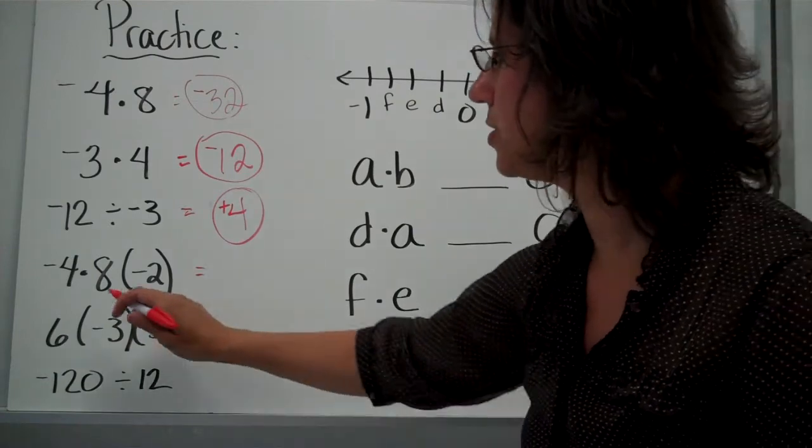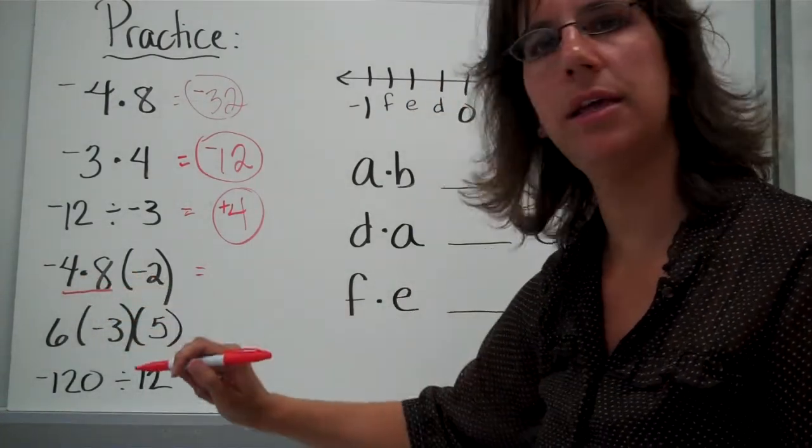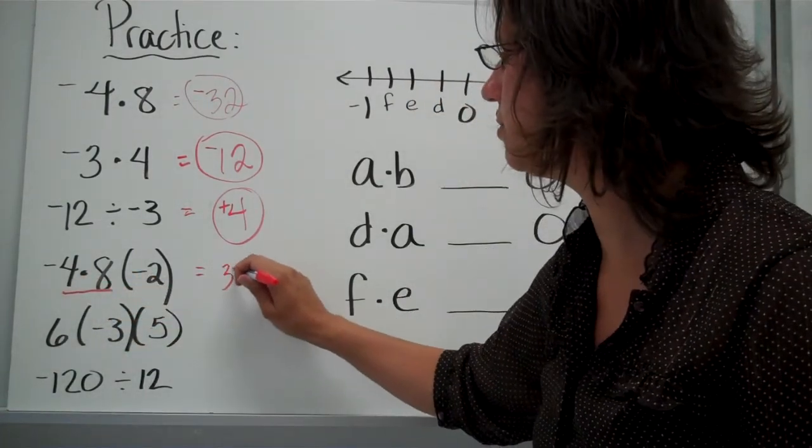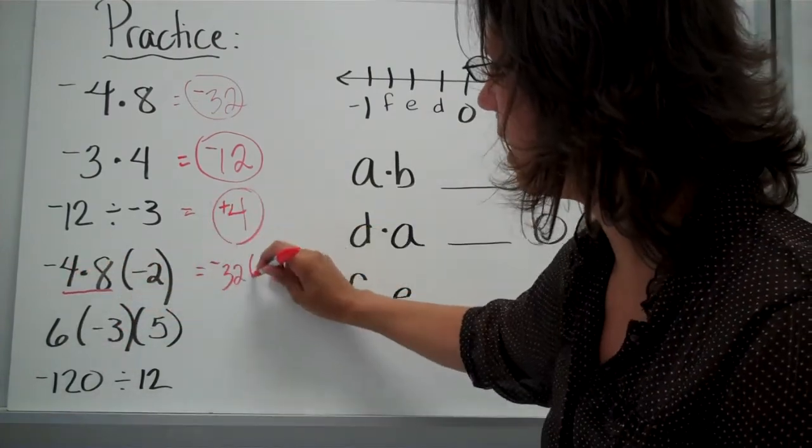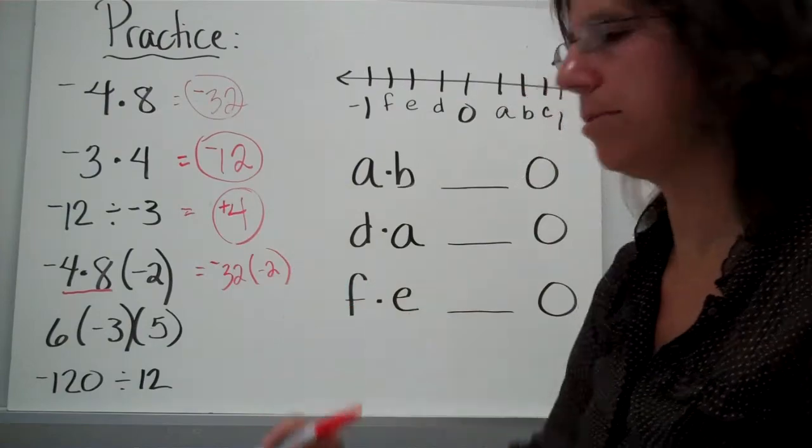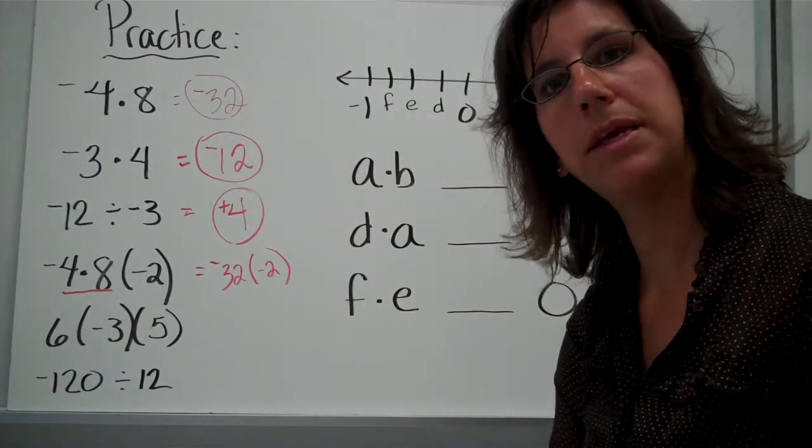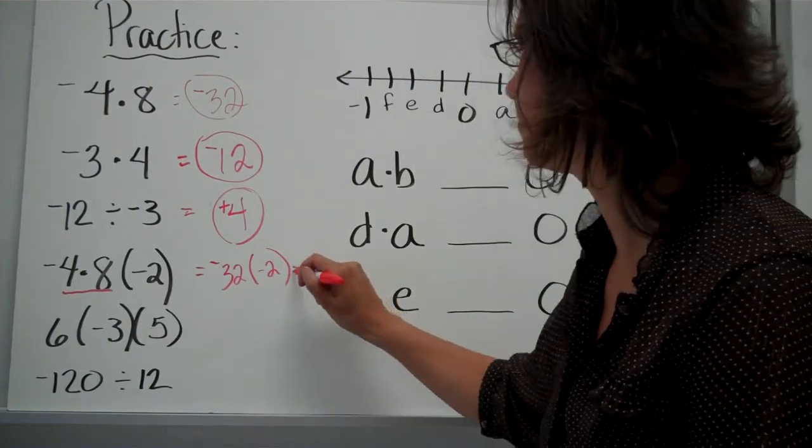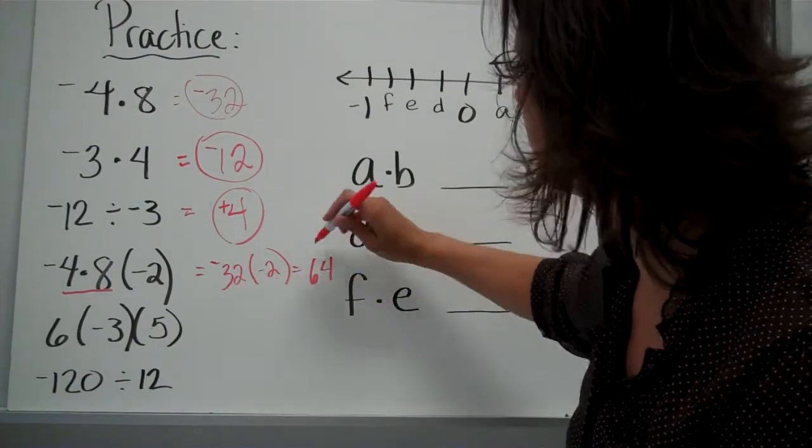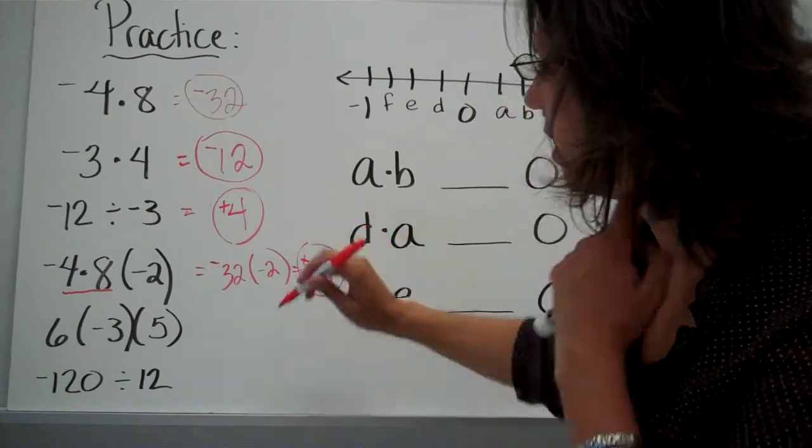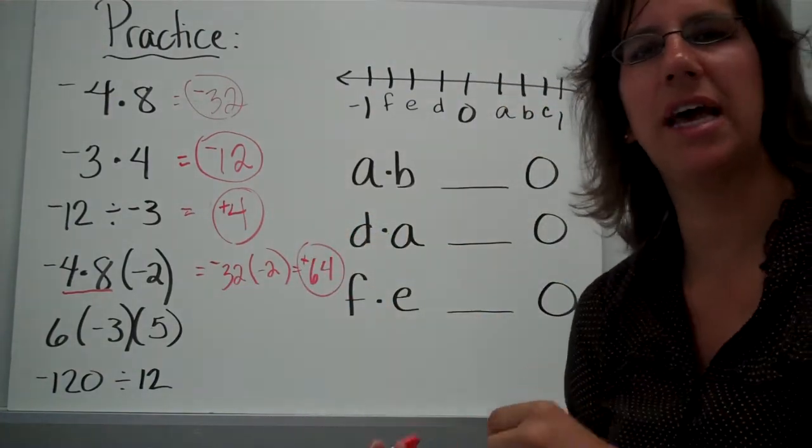Did you work them in pieces? You want to start with doing negative 4 times 8, which is 32. And the signs are different, so it's negative 32. Now, you deal with that negative 2. Remember, there's no symbol that still means to multiply. So, 32 times 2 is 64. The signs are now the same, so my answer is positive. I hope you worked that one through one piece at a time.